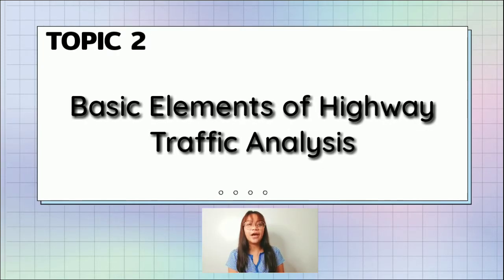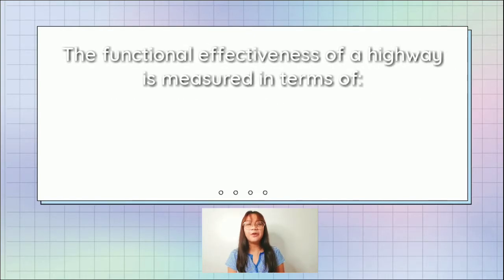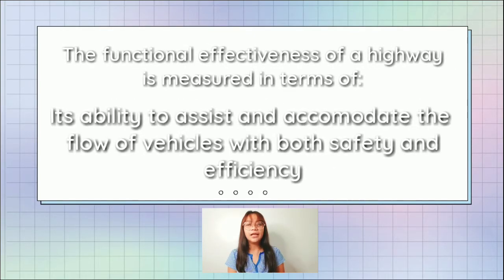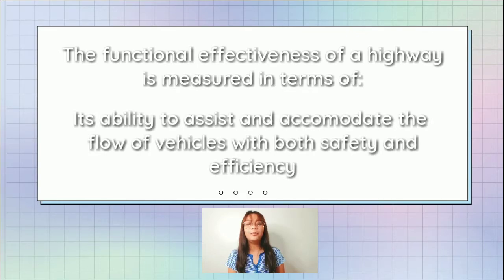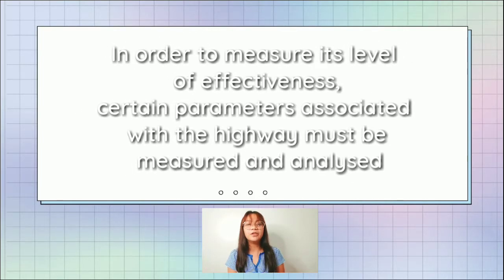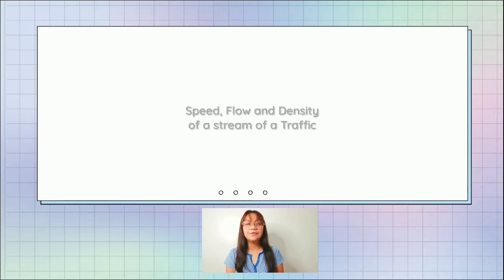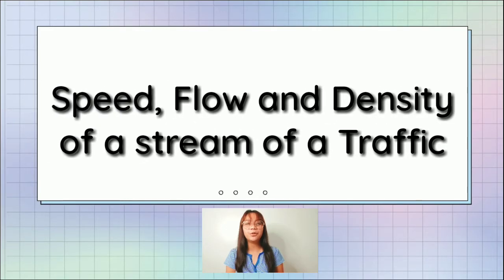The functional effectiveness of a highway is measured in terms of its ability to assist and accommodate the flow of vehicles with both safety and efficiency. In order to measure its level of effectiveness, certain parameters associated with the highway must be measured and analyzed. Let's discuss the speed, flow, and density of a stream of traffic.